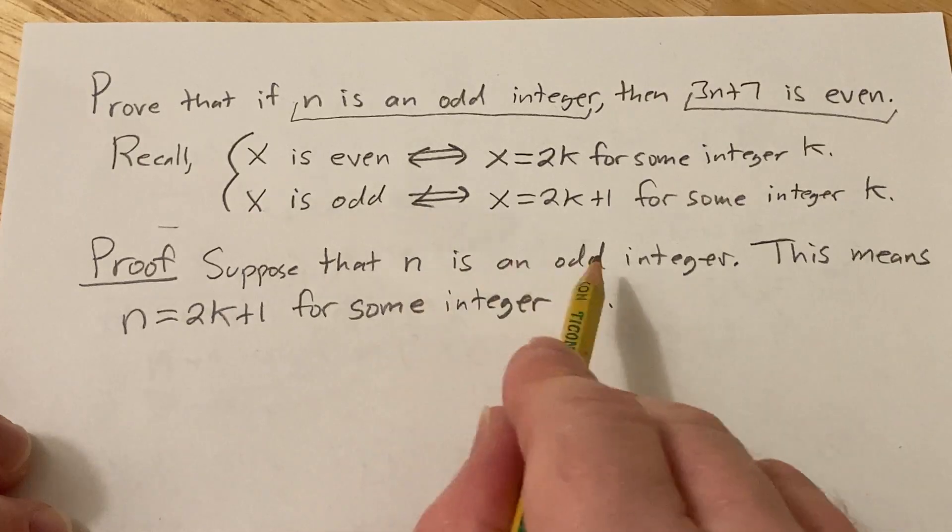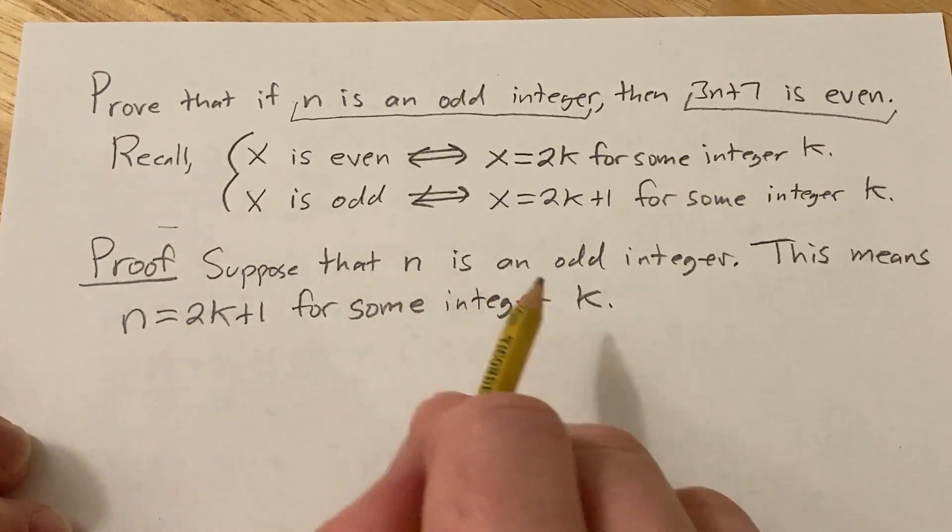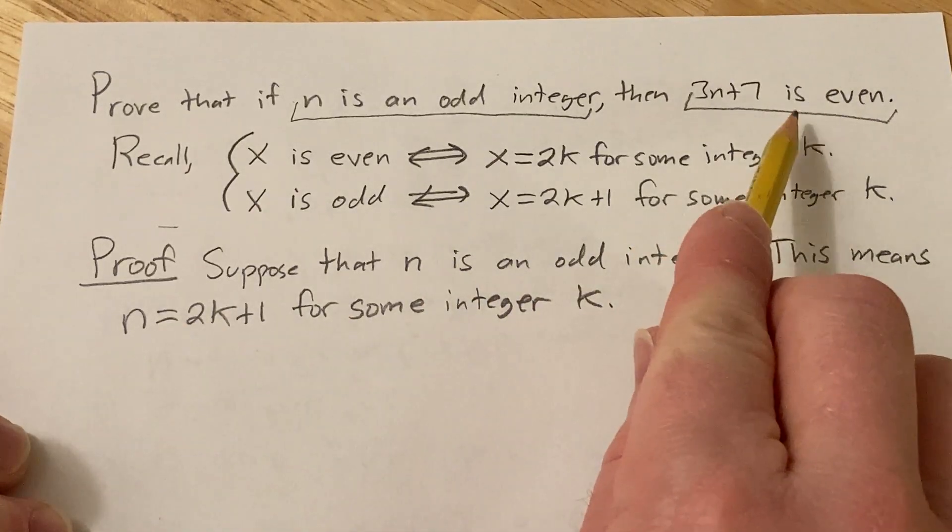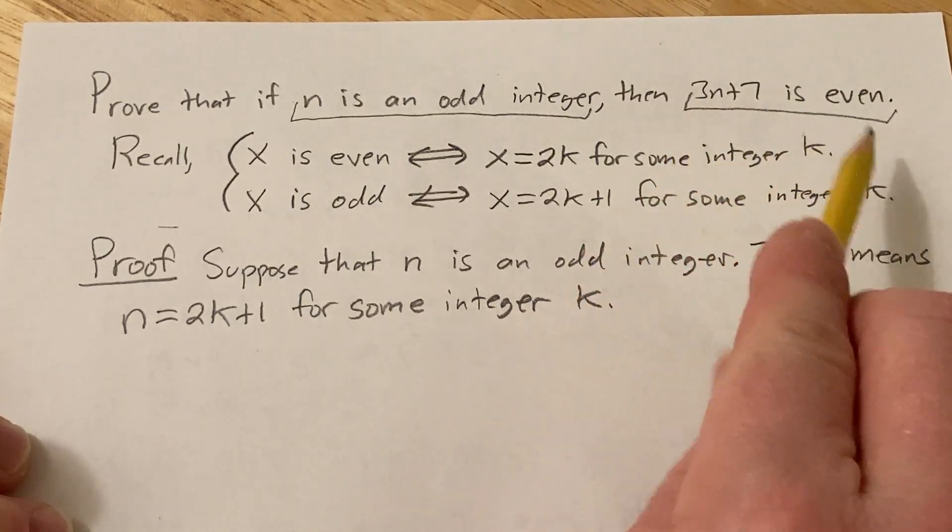Okay, so we've written down our hypothesis. We wrote down what it means for n to be odd. Now we need to investigate and try to justify why this is actually even.